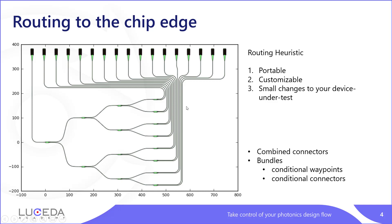So what we really need here is a routing heuristic, which is a general idea in how you want to route all your input ports to all your output ports in a portable, customizable way that survives changes to your device under test when you adapt it. Ipkis is a great platform to do that, and we have several tools at your disposal to achieve this, which is combined connectors and bundles.